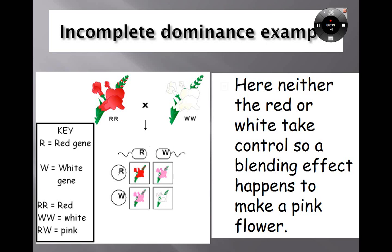This will give you a better understanding. Here, neither red nor white controls the blending effect. So if one parent is white and the other parent is red, and it's incomplete dominance, you get a pink flower. Notice the Punnett square — two of the children will be pink, while the other two will come out one looking like mom and the other looking like dad.